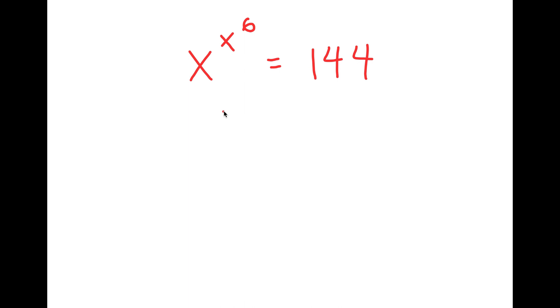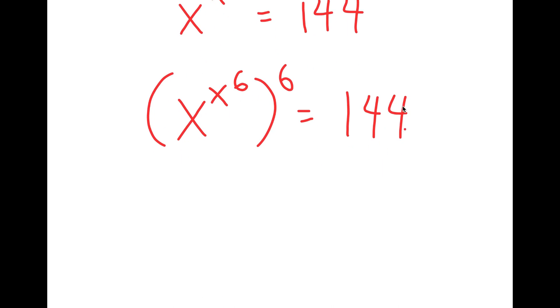So to solve this, I'm going to first start by taking the power of 6 on both sides. So I get x to the power of x to the power of 6 to the power of 6 is equal to 144 to the power of 6.